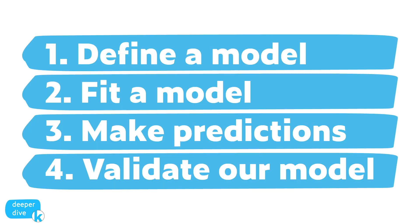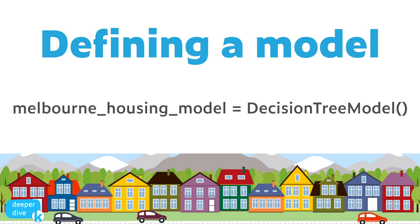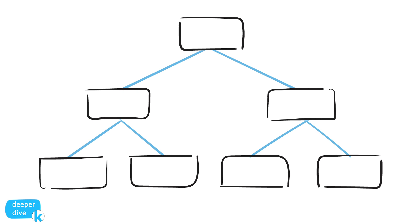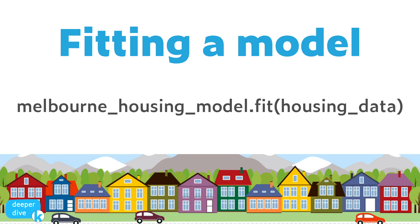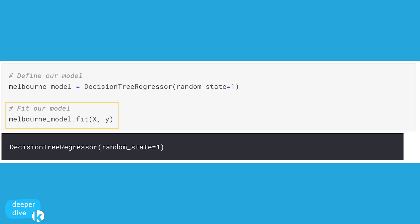Now I want to zero in on some distinct steps in the machine learning process: defining our model, fitting our model, making predictions, and validating our model. We're going to use a decision tree regressor. When we define our model, we're telling the computer to use this Python code to define the model. When we fit our model, we're applying the decision tree regressor to our data to pull out patterns according to specific rules. We see this in melbourne_model dot fit, passing capital X and lowercase y.